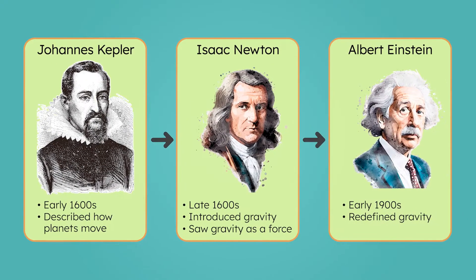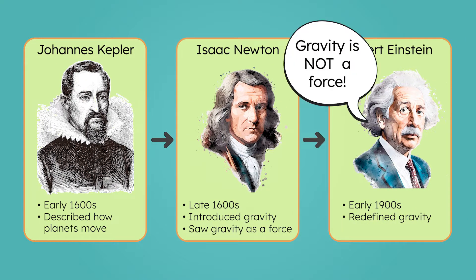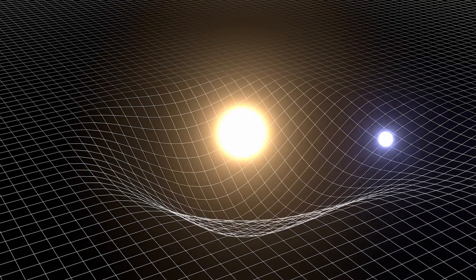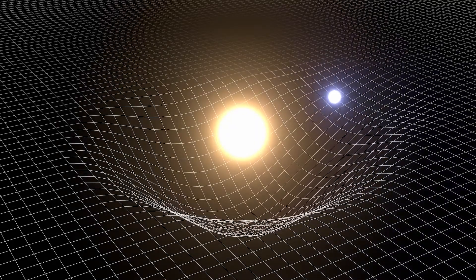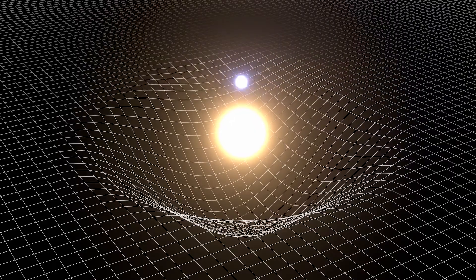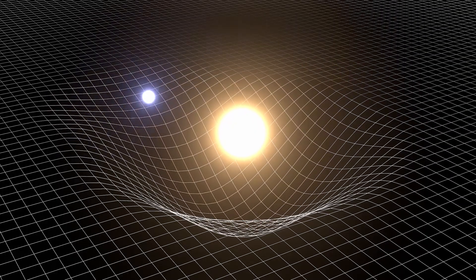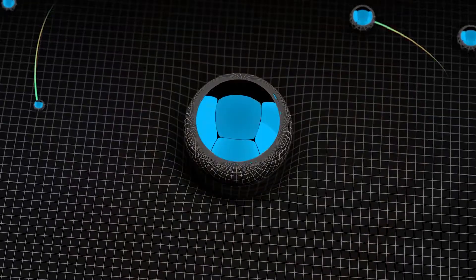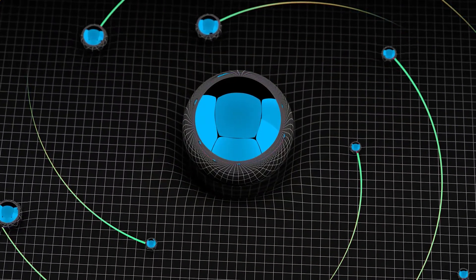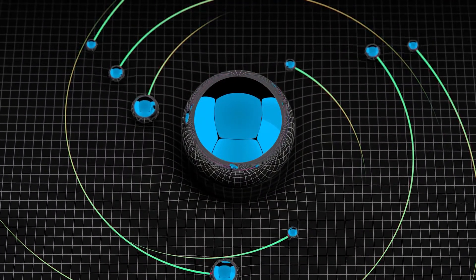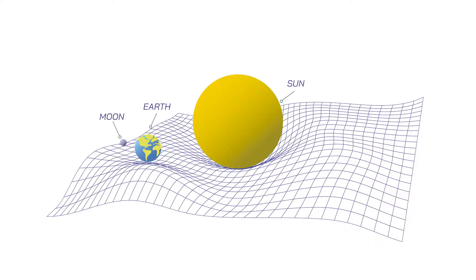That's where Einstein stepped in. He proposed something radical: gravity isn't a force at all. Instead, it's the result of massive objects bending the fabric of space and time — what we call space-time. In Einstein's view, planets orbit the Sun not because they're pulled by a force, but because they follow the curved paths created by the Sun's mass. This idea forms the basis of Einstein's theory of relativity.